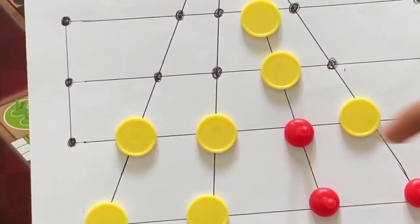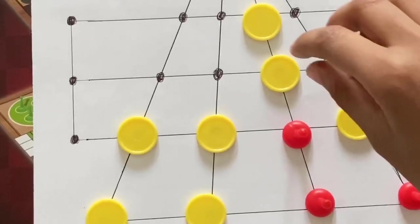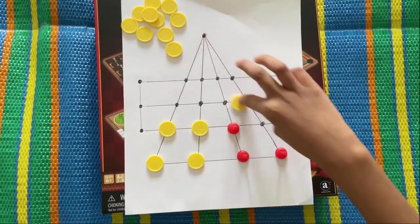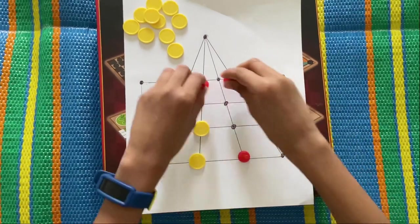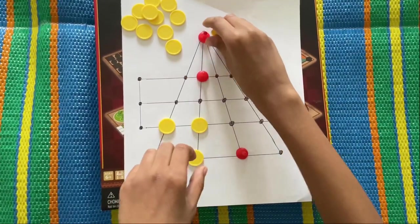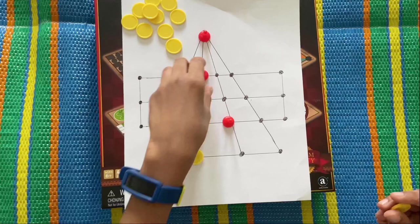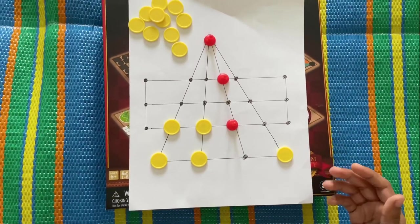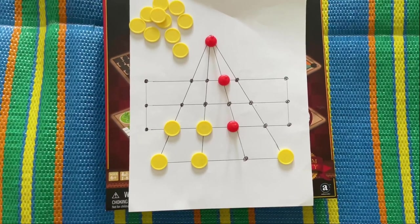The game ends because the tigers cannot move. If it's not like that, if the tiger gets all of the 15 sheep and eats it, the game ends.